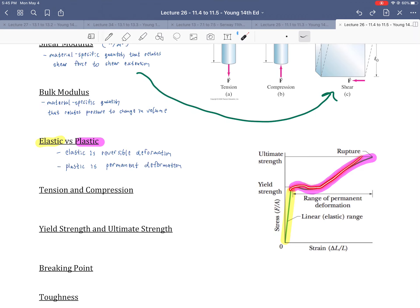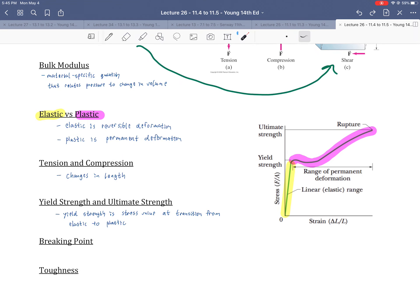Past the elastic region is the plastic region, which is a permanent deformation process. So if an object is being deformed plastically, it's not going back. Notice that when you transfer from the linear elastic region to the nonlinear plastic region, there is a yield strength. Tension and compression are changes in length. They refer to the pictures up above. Now on to some topics that further explore the stress-strain graph.